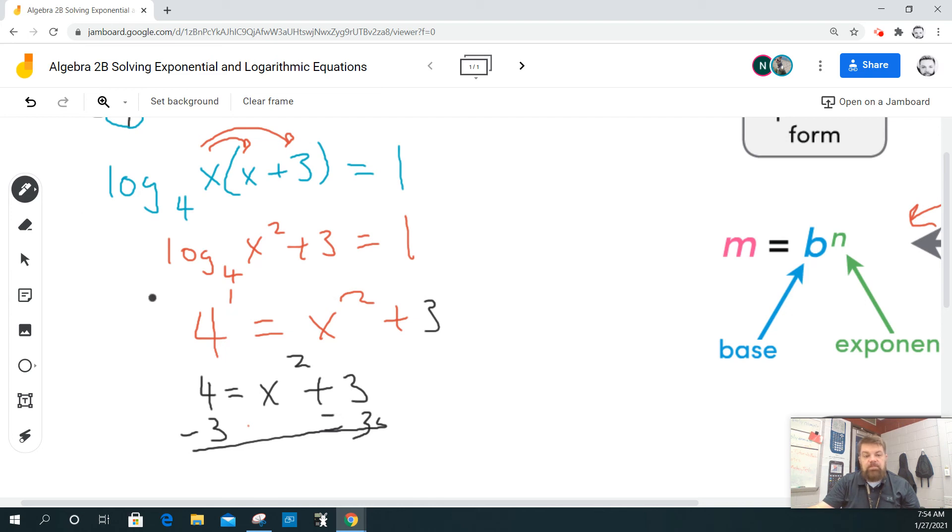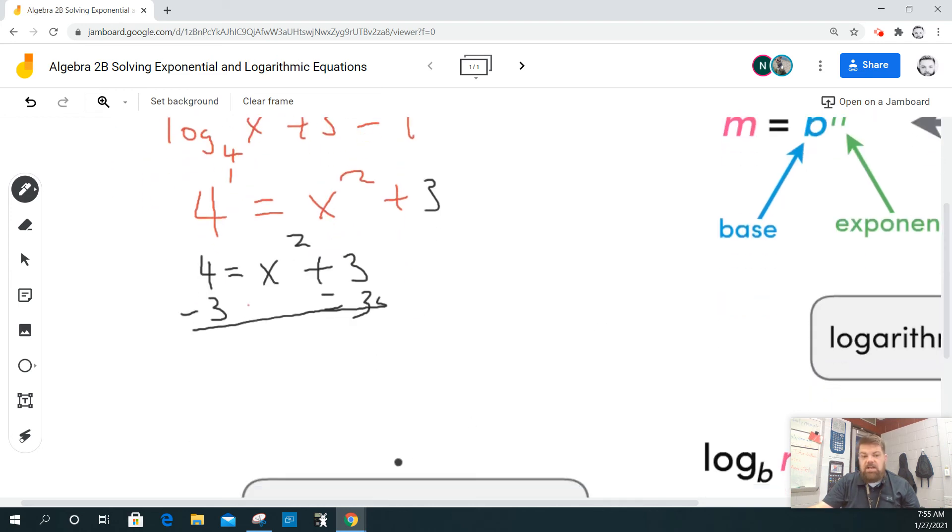This is minus 3. And when I do that, I get 1 equals x squared. So, if I take the square root of both sides, the square root of 1 is actually just 1, and that is equal to x.